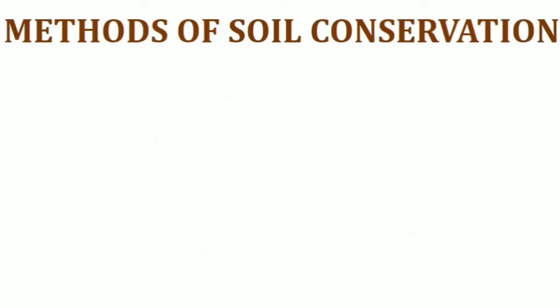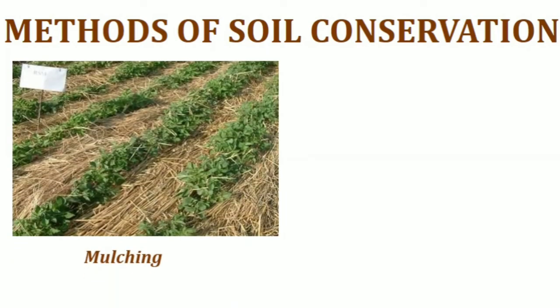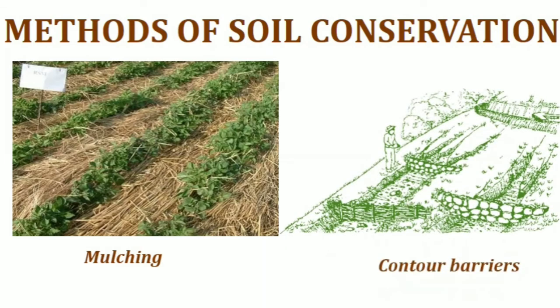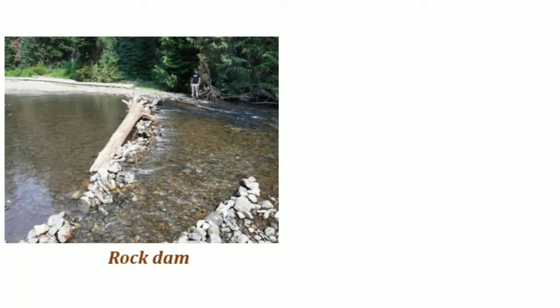Now we shall study some methods of soil conservation. First, mulching — the ground between plants is covered with a layer of organic matter like straw; it helps to retain soil moisture. Contour barriers — stones, grass, and soils are used to build barriers along contours, with trenches in front to collect water. Rock dams — rocks are piled up to slow the flow of water, preventing gullies and further soil loss.